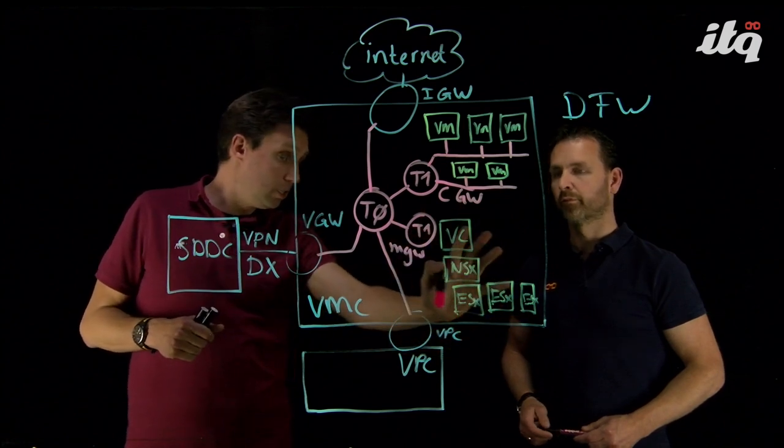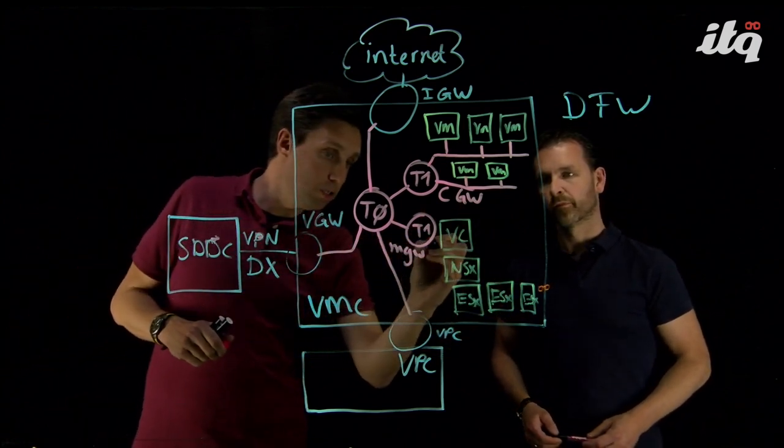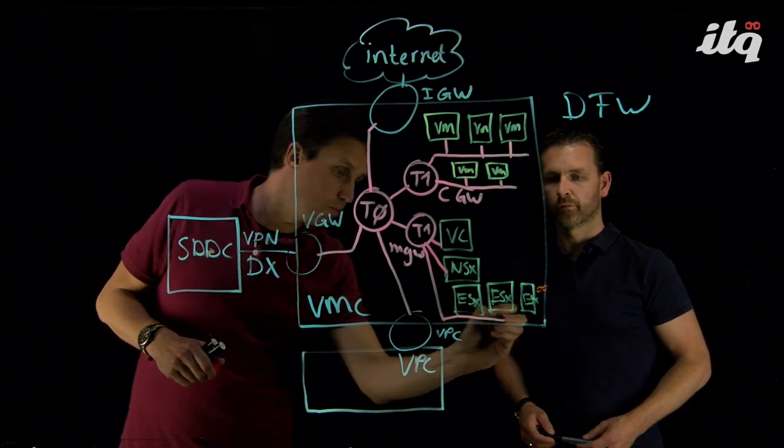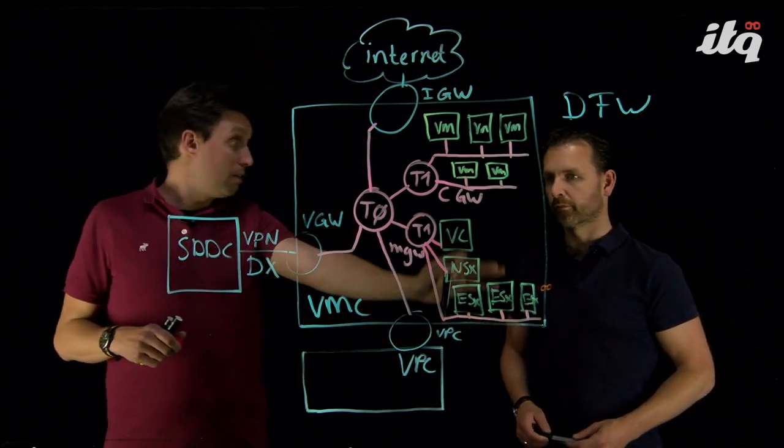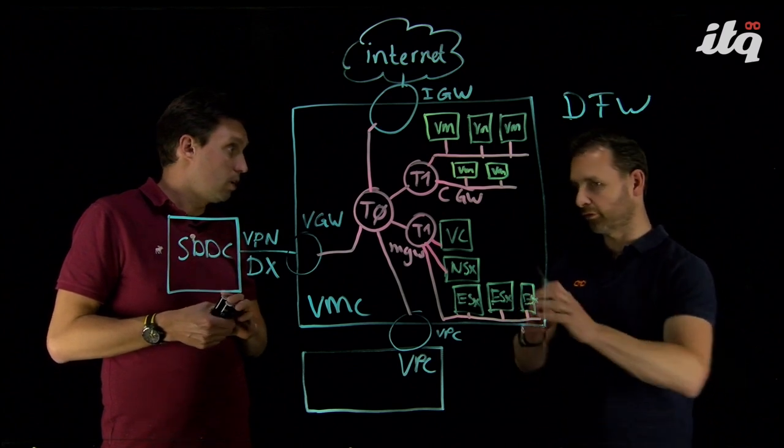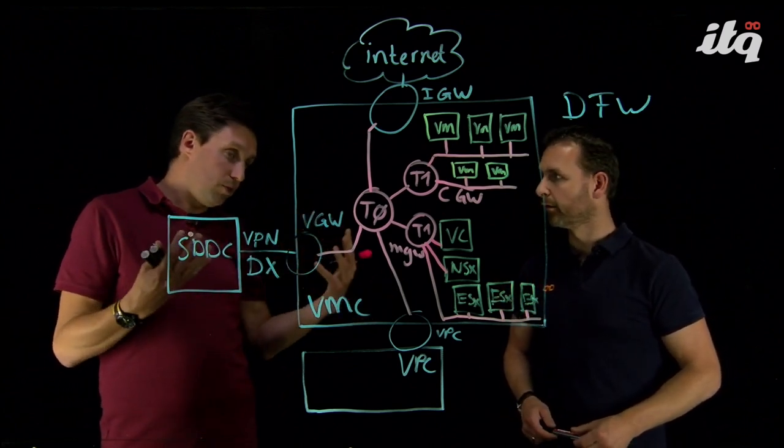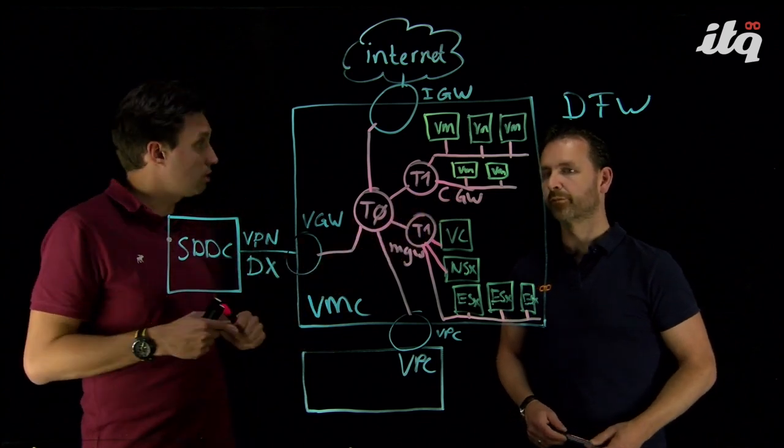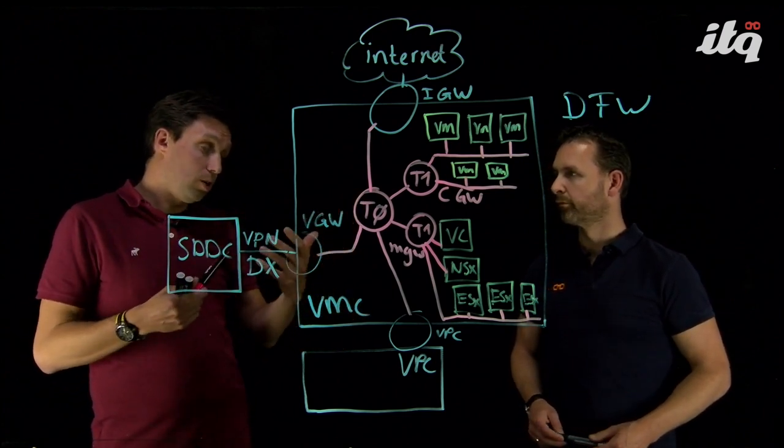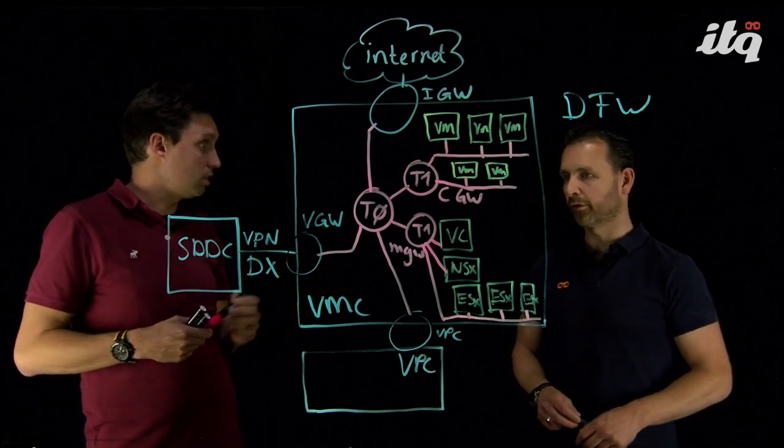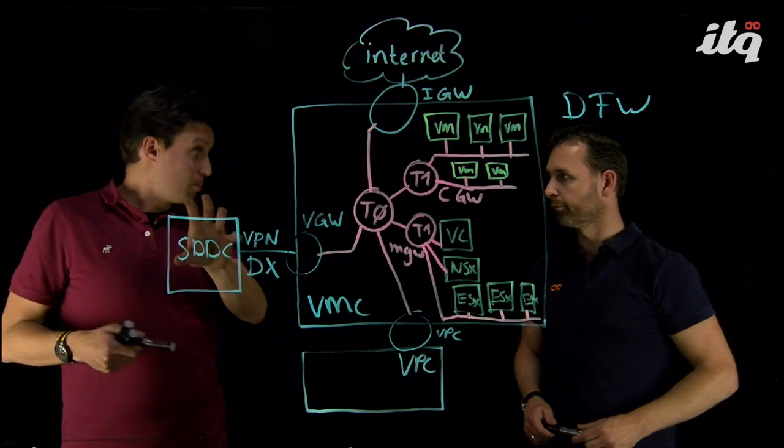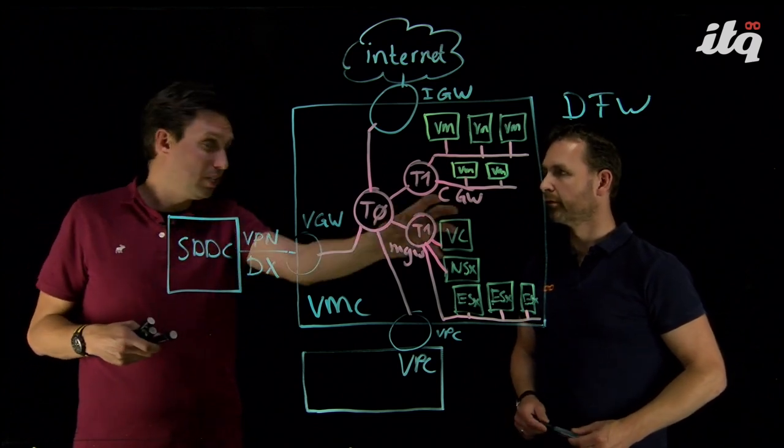So, for the management gateway, this part, we also have three segments. One for the vCenter, one for NSX, and one segment here at the bottom for your ESXi hosts. This is all managed by VMware, and it is pre-configured as part of the service. So, we don't need to bother with managing or configuring all those networks as a customer. That's correct. The only thing you have to think about, for example, if you want to access your vCenter server, you have to do some initial firewall configurations, so you can configure in what way you can access your vCenter server. Because you want to prevent that everyone in your SDDC can access the management server. You can determine which, for example, which on-premises VLAN is allowed to access the vCenter server.